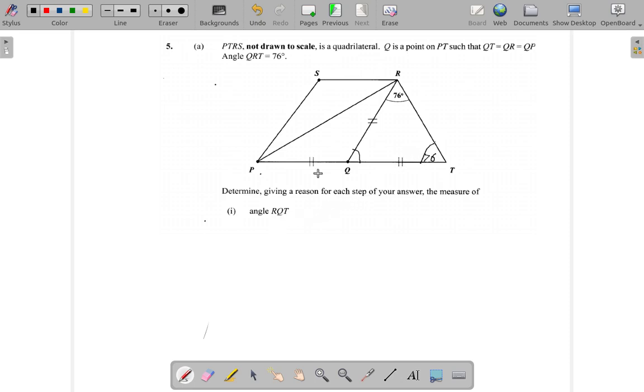What they want is RQT, this. You have to find it somehow. Remember, all the angles, all the three angles here, add up to 180 degrees.